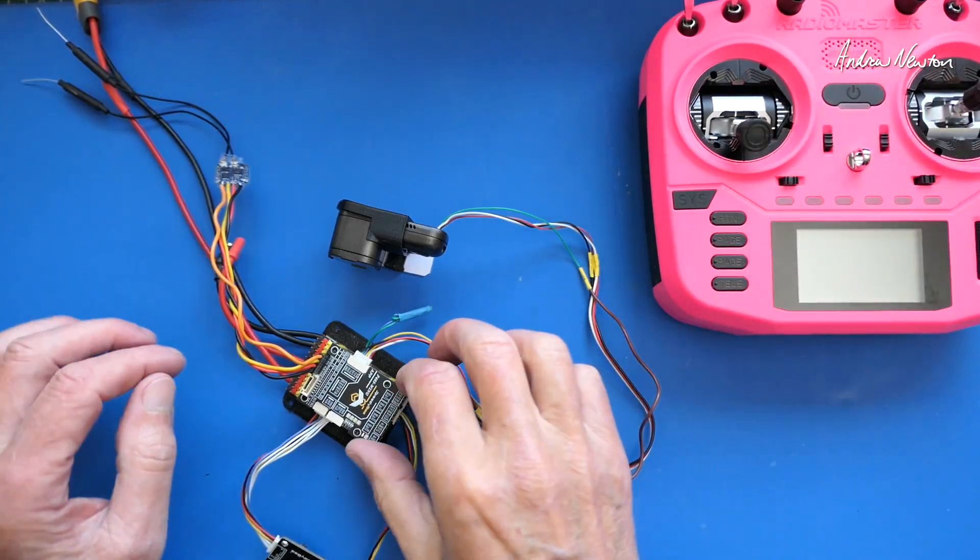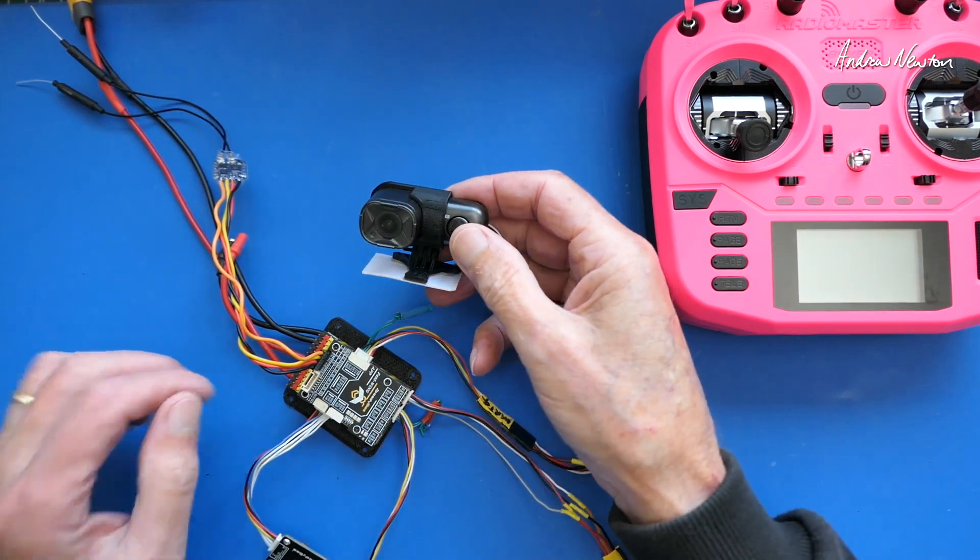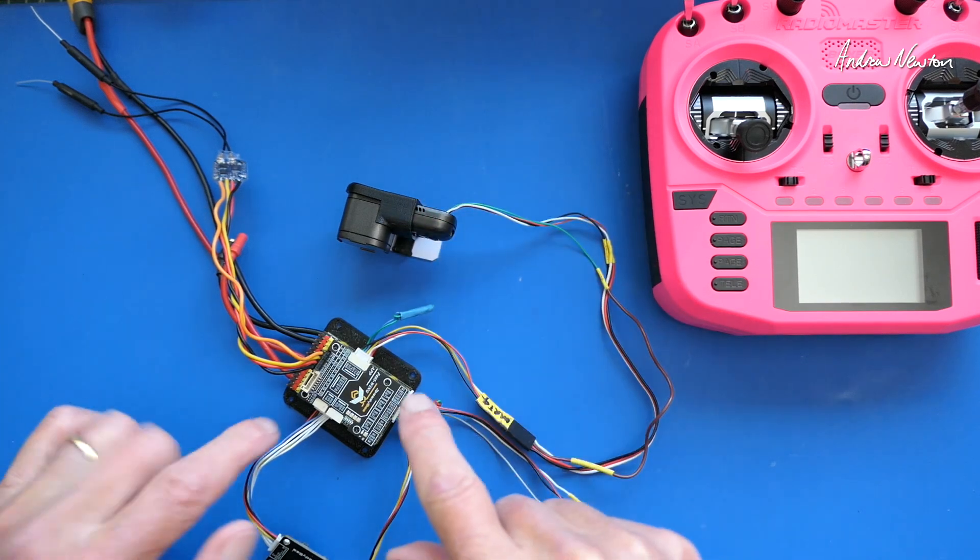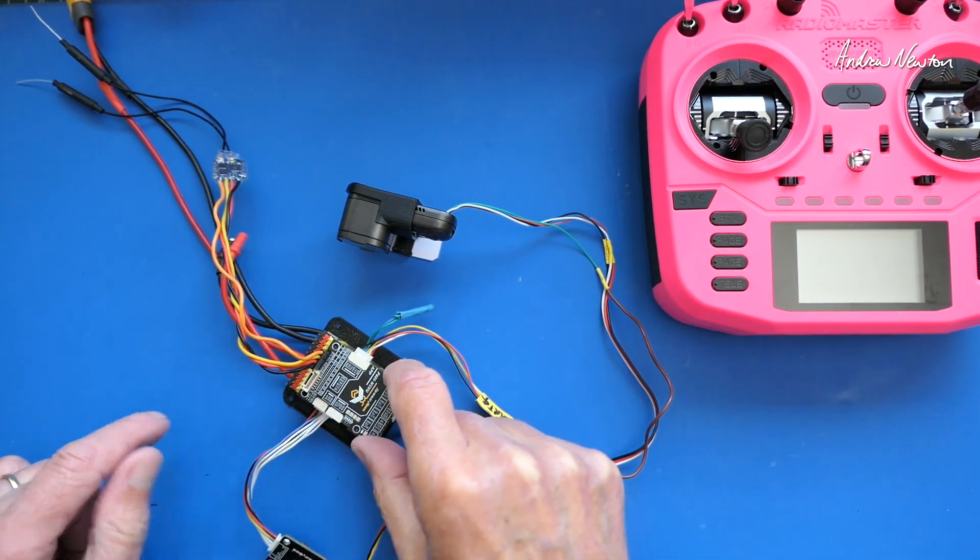Greetings folks, in this video I'm going to show how to set up UART control of the Runcam Thumb Pro W using the Speedybee F405 wing board.